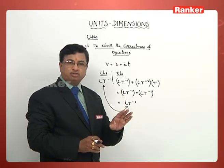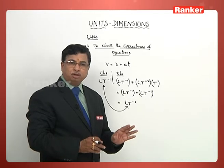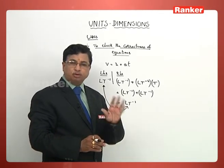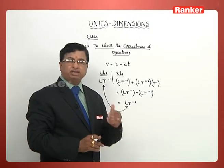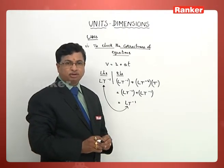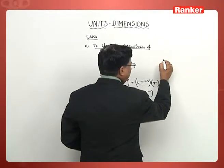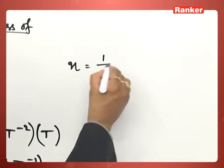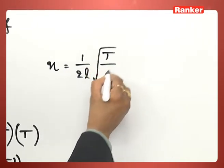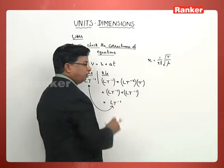So whether the equation is dimensionally true or false, we can decide using the dimensional formulae of the quantities in that equation. Similarly, let us take one more example. There is an equation: n = 1/(2L) × √(T/μ). This is the equation given to us.